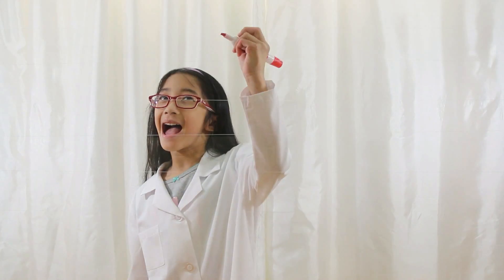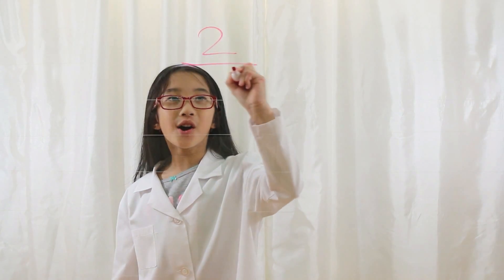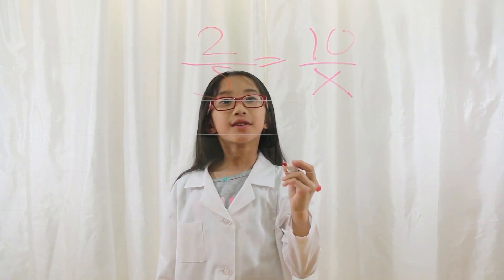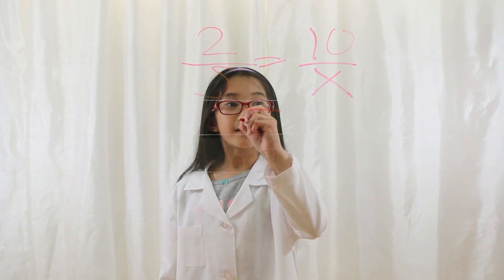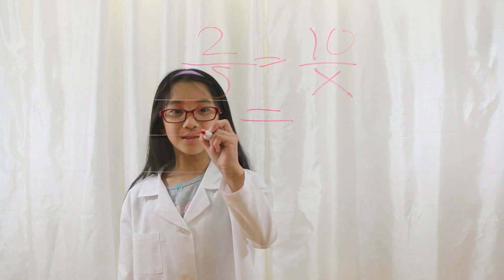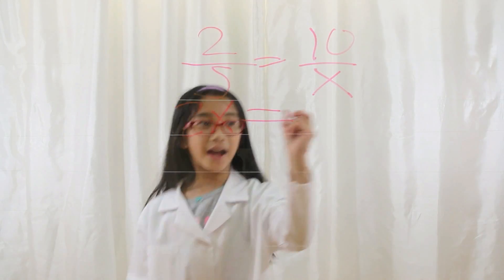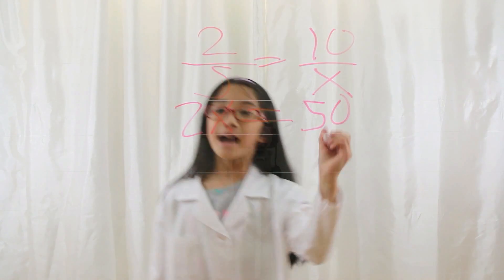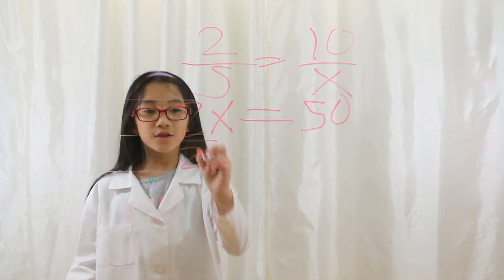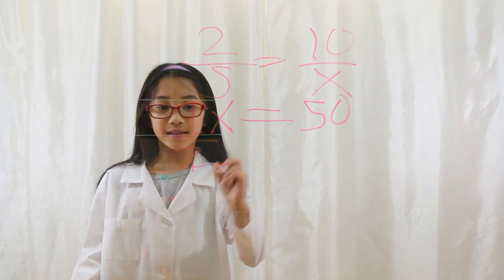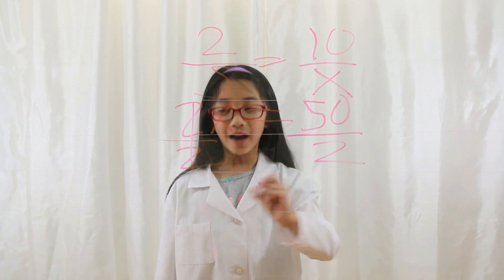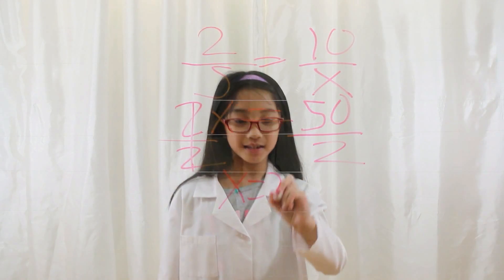Let's say you have 2 over 5 equals 10 over x. First you bring the equal sign down, then you cross multiply. 2 times x equals 2x, and 10 times 5 equals 50. Now you solve for x — you divide by 2 on both sides. 2 divided by 2 is 1, so that cancels. 50 divided by 2 is 25. So x equals 25.